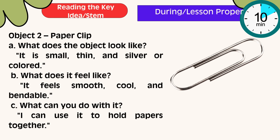For object number 2, a paper clip — What does the object look like? It is small, thin, and silver or colored. What does it feel like? It feels smooth, cool, and bendable. What can you do with it? I can use it to hold papers together.